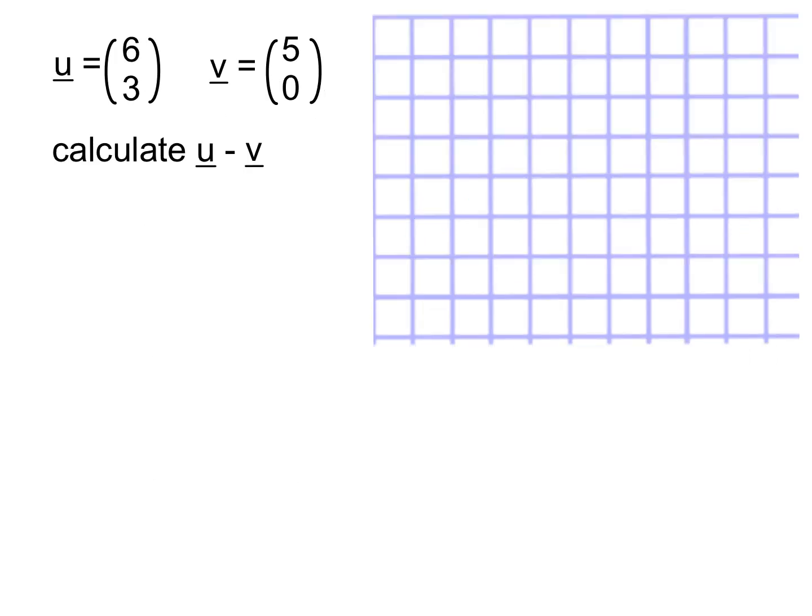All right. So we're going to do another one. We're going to do U take away V. And again, I will do it using a drawing and I will do it mathematically first. So I'll do it mathematically first. So U minus V is going to be 6, 3, take away 5, 0. So we've got 6 take away 5 is 1, 3 take away 0 is 3. So my answer is 1, 3.